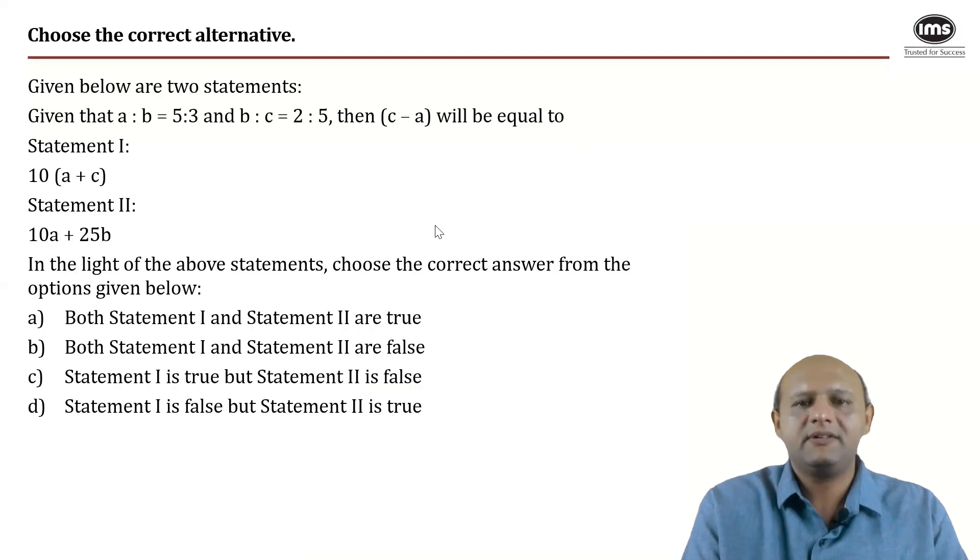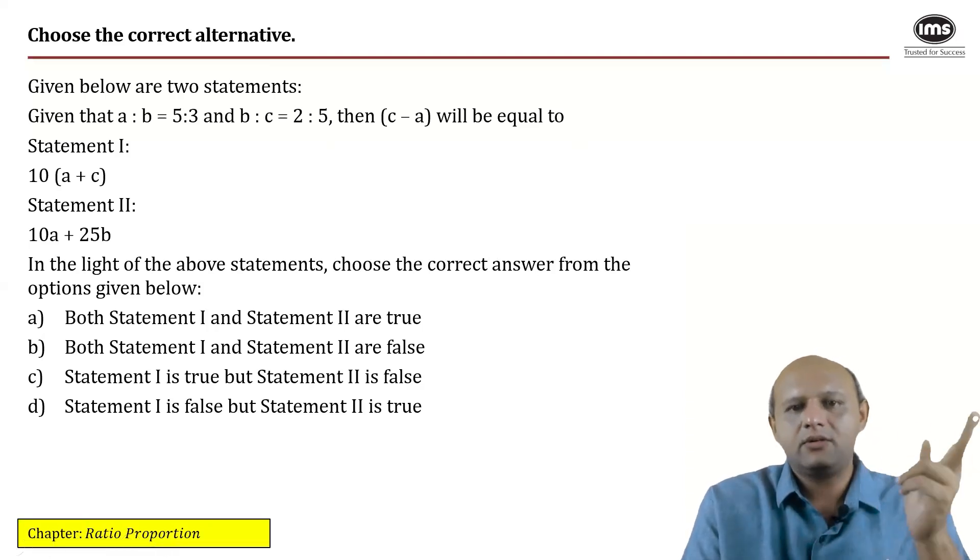So what does this question say? It is evidently a question on ratios, ratio and proportion. In conclusion to what we had previously, which was given as a is to b is 5 is to 3 and b is to c is 2 is to 5, c minus a equals to what, right?